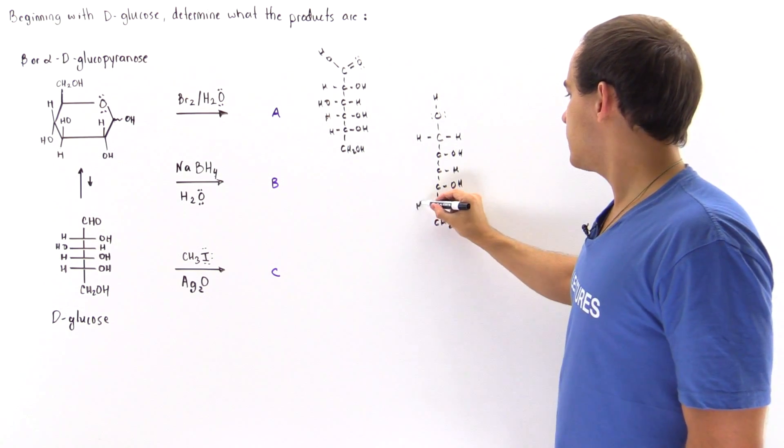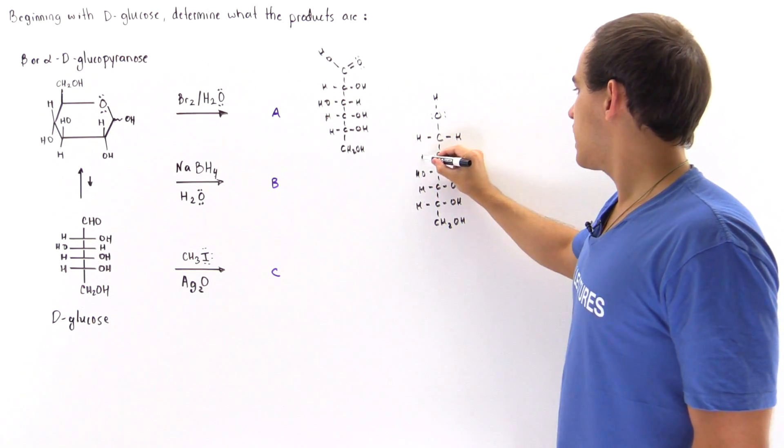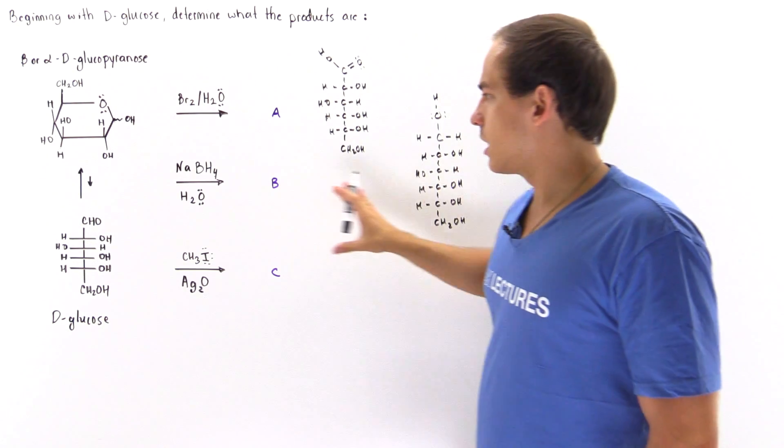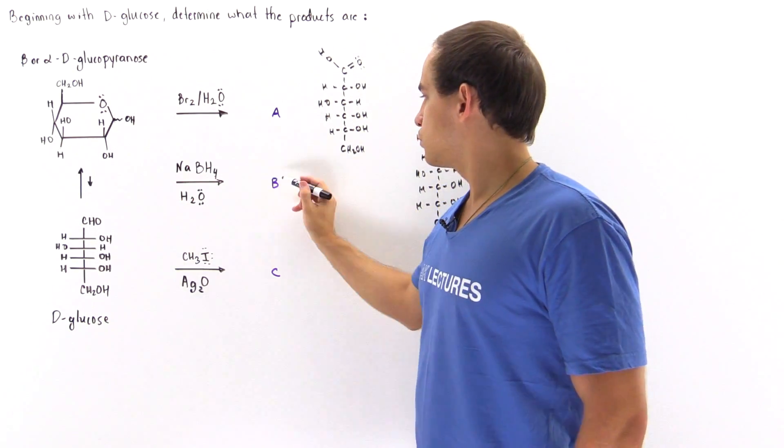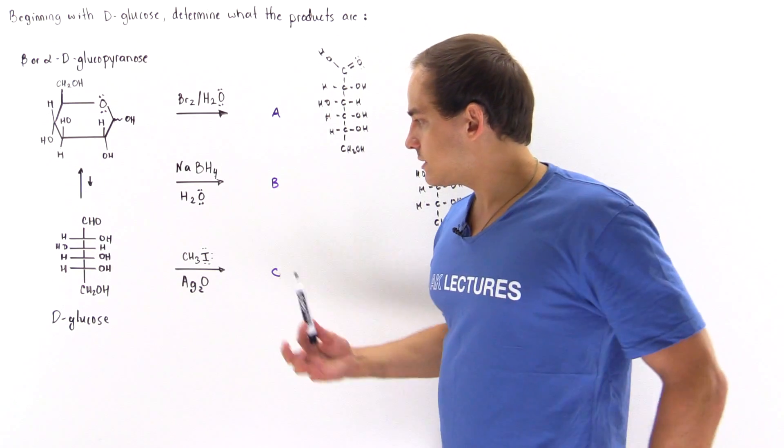Here we have an H, here we have an H, here we have an OH, and here we have an H. So this is the product of reaction 2, this is B.